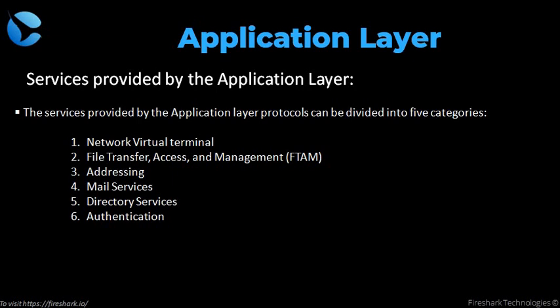Addressing: to obtain communication between client and server, there is a need for addressing. When a client makes a request to the server, the request contains the server address and its own address. The server responds to the client request, and the response contains the destination address, which is the client address. To achieve this kind of addressing, DNS is used. Mail services: the application layer provides email forwarding and storage.